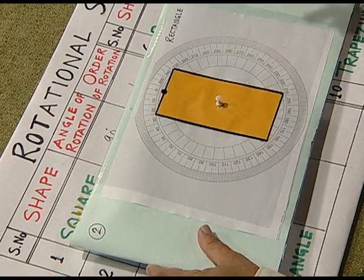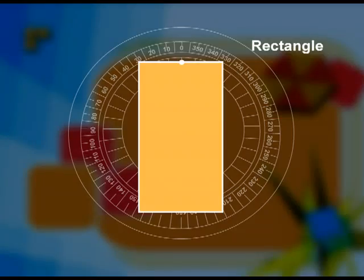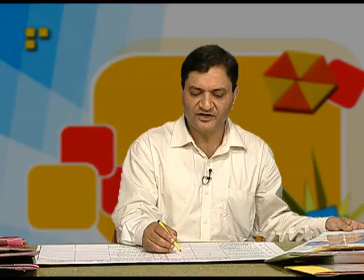Therefore, in a complete rotation of 360 degrees, the rectangle takes its original shape twice. The order of rotational symmetry is 2. This can be verified: order of rotation = 360 ÷ 180 = 2.